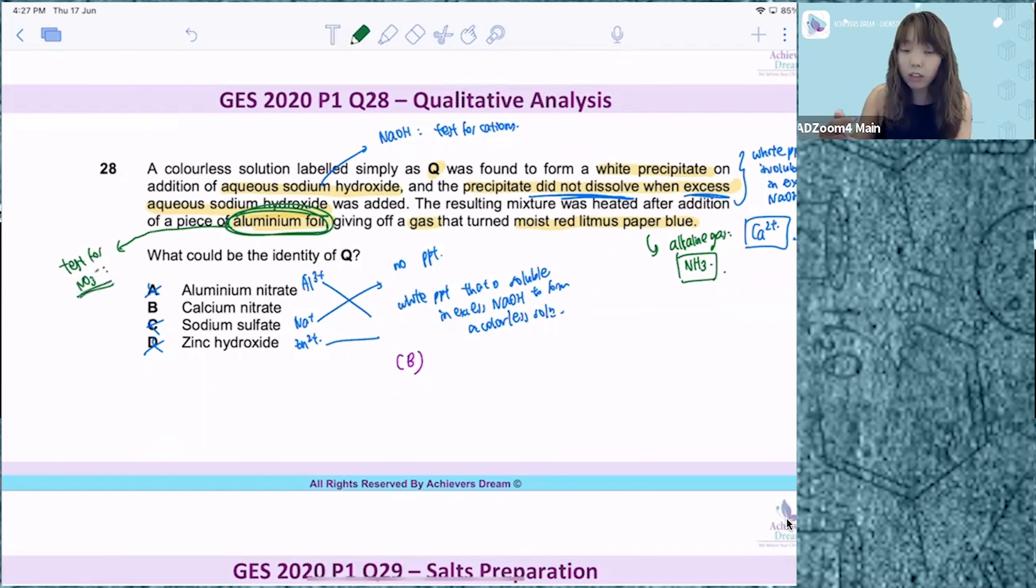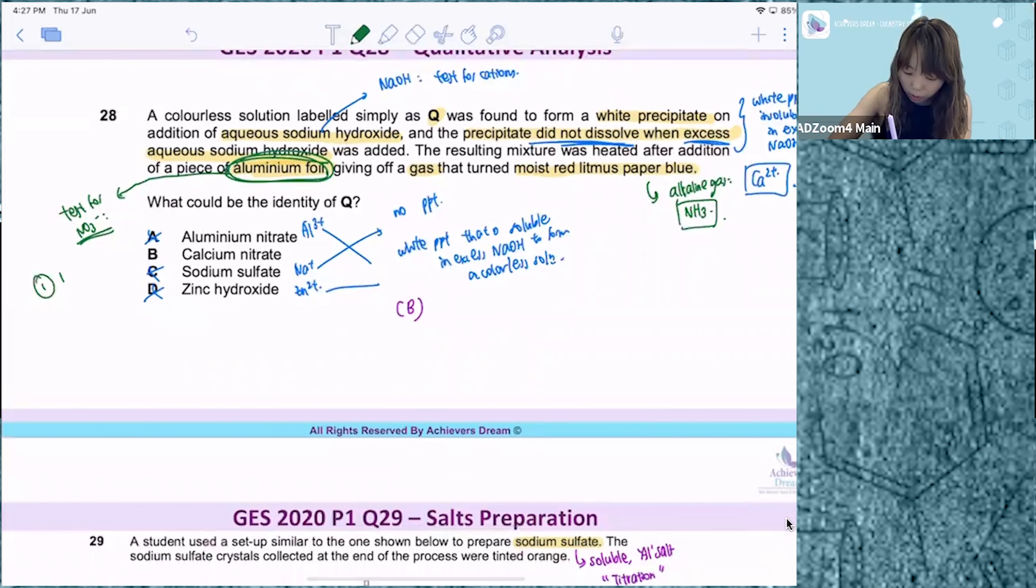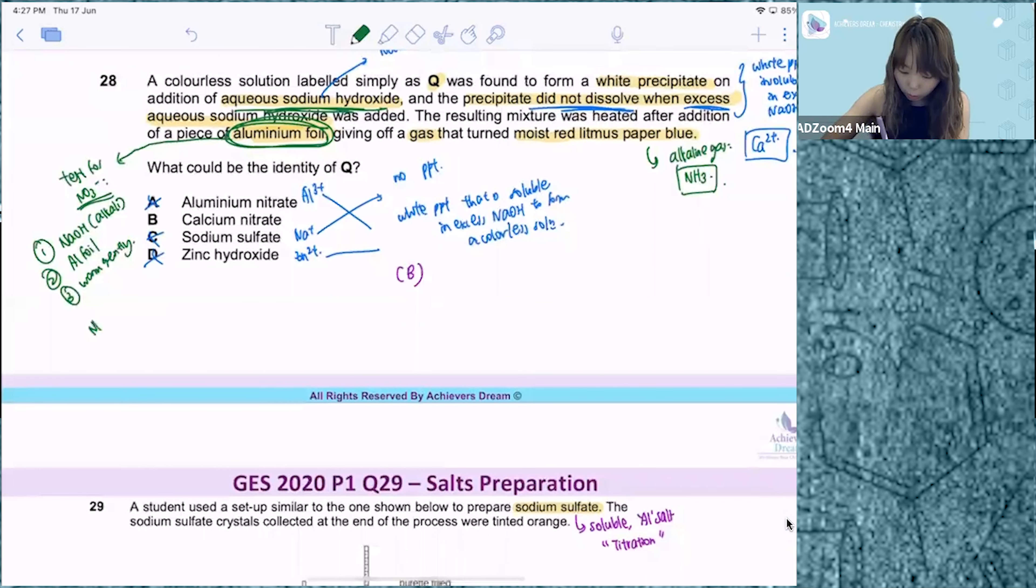Recall that to test for nitrate is a three-step process. First one is you add in an alkaline. So in this case, they already added in sodium hydroxide. Then after that, you add in aluminium foil. Third step is to warm gently.